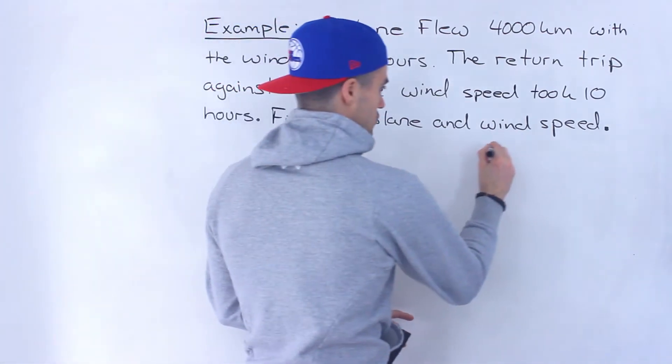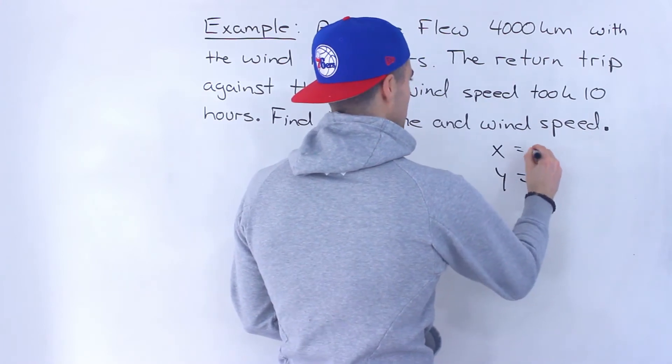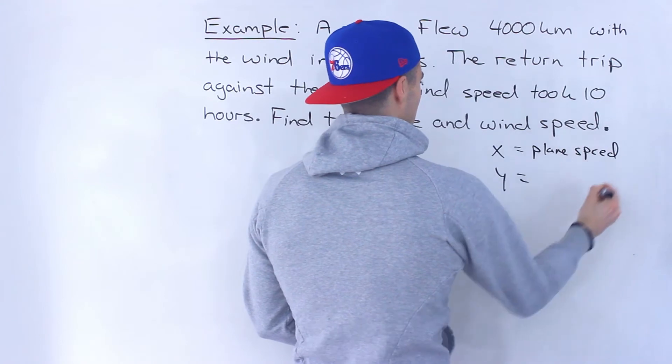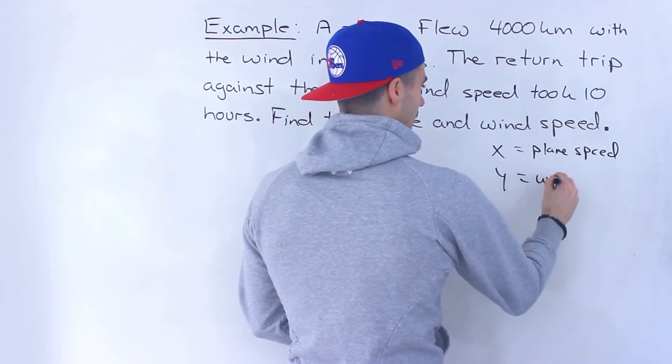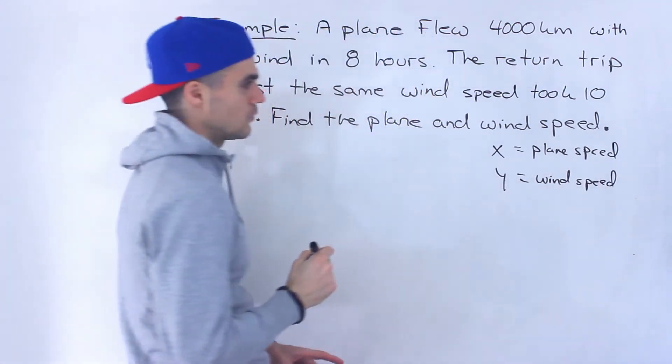Since we're finding both of these things I'm actually going to introduce two variables, X and Y. So we're going to let X be the plane speed and then let's let Y be the wind speed.